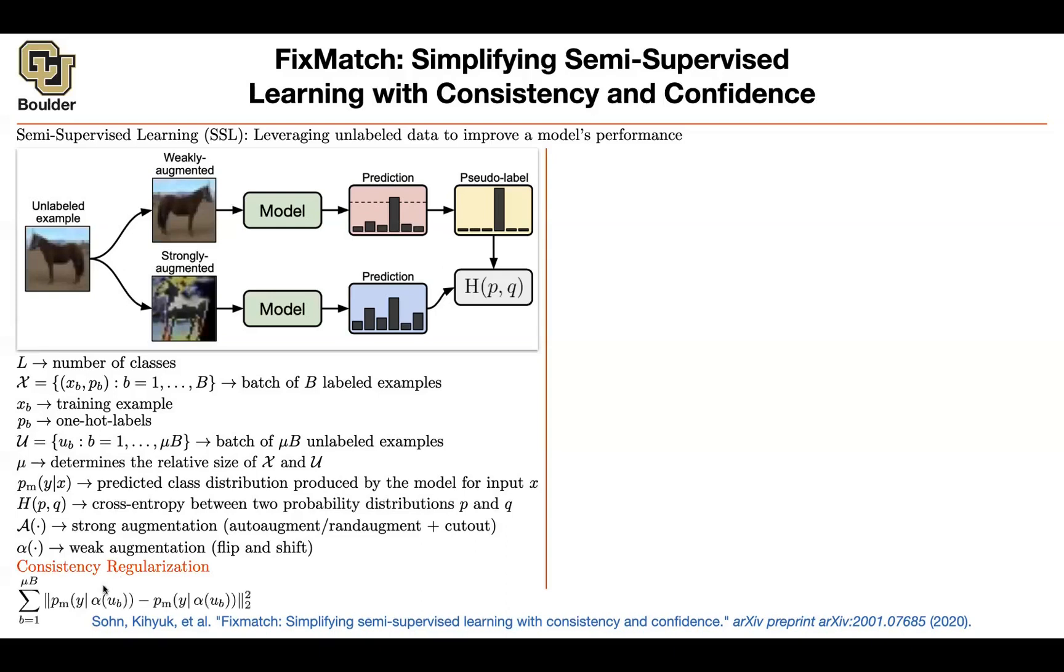We learned about consistency regularization, which is that if you take your unlabeled image, augment it, push it through your model, it should give you the same distribution. You might say these two are actually the same—no, because alpha is a stochastic function. Each time you call it, it's going to augment your image in a different way. Also, p_Ms don't need to be the same—you could have different dropouts in them, or one of the models could have different parameters. So these are actually different things.